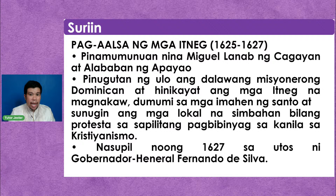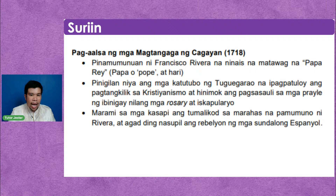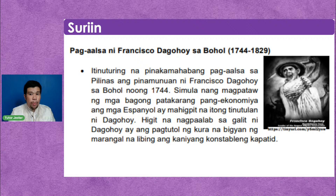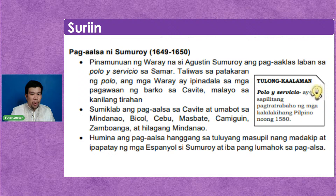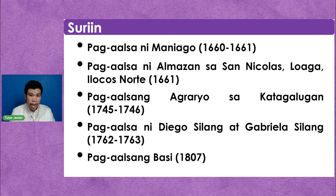Kikilalaan natin ang mga tauhang iyan sa mga susunod na linggo. Ilan sa mga pag-aalsa: pag-aalsa ni Lakandula; pag-aalsa ng mga dato ng Tondo noong 1587–1588; pag-aalsang panrelihiyon; pag-aalsa ng mga Igurot; pag-aalsa ni Bangkaw; pag-aalsa ng mga Itneg; pag-aalsa ni Tapar sa Panay; pag-aalsa ng mga Magtangaga noong 1718; pag-aalsa ni Francisco Dagohoy sa Bohol noong 1744–1820; pag-aalsa ni Apolinario de la Cruz sa Tayabas, Quezon; pag-aalsa ng ekonomiko; pag-aalsa ni Magat; pag-aalsa ni Ladia sa Malolos, Bulacan noong 1643; pag-aalsa ni Sumuroy; pag-aalsa ni Diego Silang at Gabriela Silang; at pag-aalsa ni Basi. Iisa-isahin natin yan sa susunod na linggo.